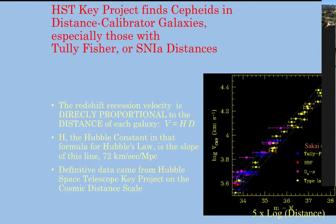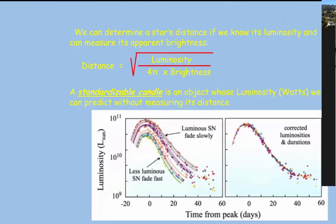Now here's the big question: are type 1a supernovae standard candles? Is the peak brightness of all white dwarfs driven over the Chandrasekhar limit the same intrinsic luminosity? No, I'm sorry — they're not. Some are bigger explosions, some are smaller. Here's a bunch of light curves of type 1a supernovae. You better catch them at the peak, because if you've missed that, you don't know how bright they were. The peak can be more than the luminosity of all the stars in the Milky Way, and sometimes it's a factor of 10 less — comparable to but less than the entire Milky Way. Bummer — so it's not a standard candle... but wait.